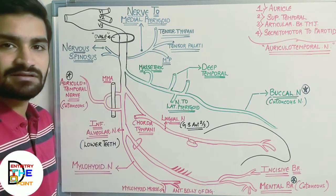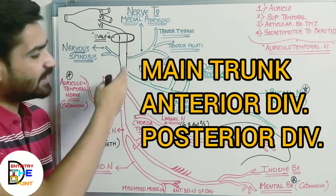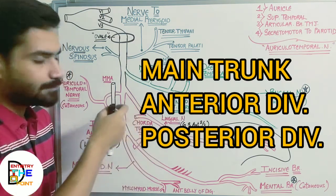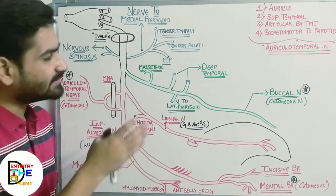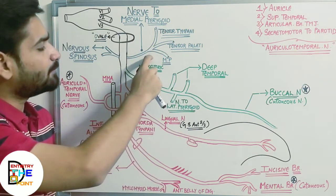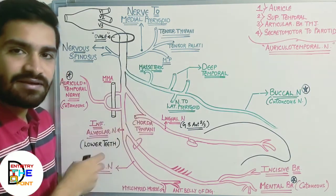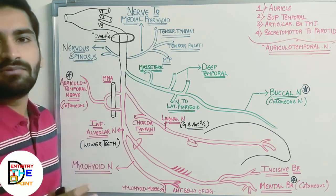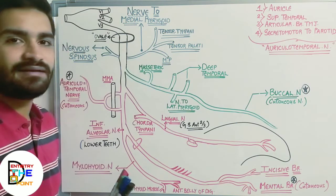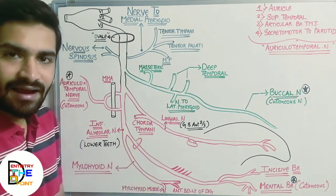From the foramen ovale, the nerve comes down and divides into three divisions — not three branches, but three divisions. The first is the main trunk of the mandibular nerve, the second is the anterior division (demarcated in green), and the third is the posterior division (in red). After passing through the foramen ovale, the main trunk divides into these three divisions.